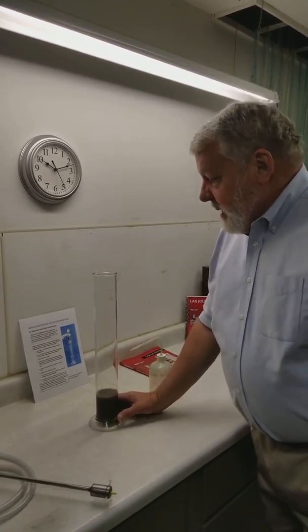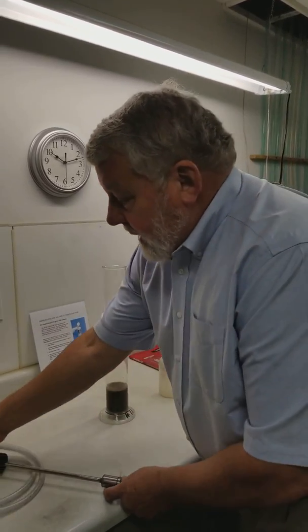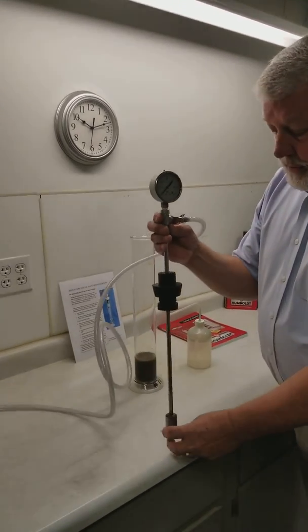Oftentimes it's convenient to do that the afternoon before you're going to do the test and then your sample is ready to disperse. Now that the sample is soaked for the 16 hour period we can use the air jet to disperse the soil.